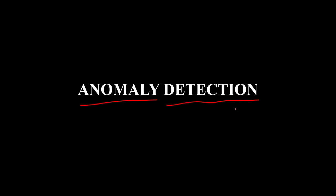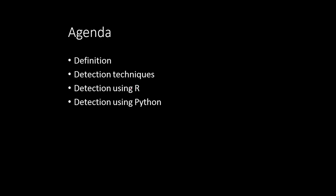In this video I'm going to be talking about what is anomaly detection, what is the definition of anomaly detection, what types there are, and how we actually detect anomalies. We will cover these four things: first the definitions, then the techniques used to detect anomalies, and then we will learn how to detect anomalies using R and Python. Please stay till the end — you will be learning the theory as well as the applications of anomaly detection.